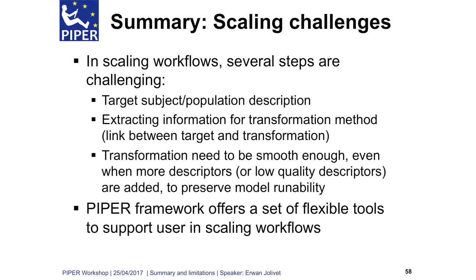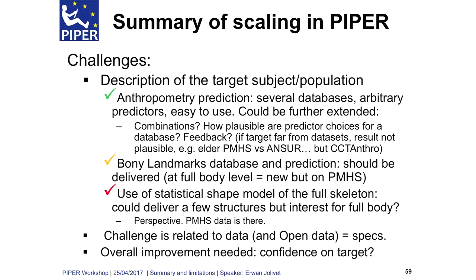Piper offers a set of flexible tools to support users in the workflow to scale a model. First, to describe the target, we have the anthropometric module for a few number of predictors. You can predict a full set of anthropometric dimensions. It could be extensible, but what about a combined dataset? How can we deal with targets far from datasets? What is the possibility of structural prediction? This is work to be done to understand how it can work.